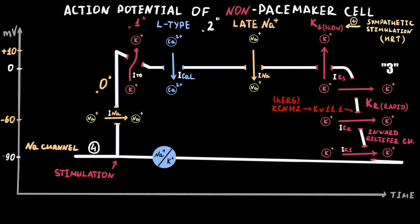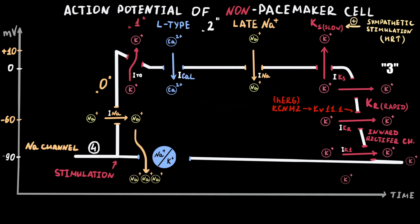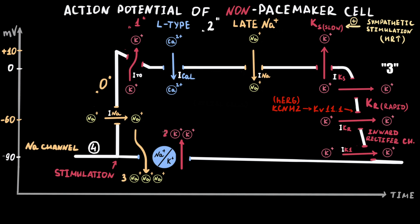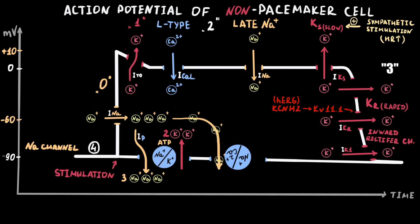There are two important ion exchangers. The sodium-potassium pump moves three sodium ions out of the cell in exchange for two potassium ions that move into the cell, and requires energy from ATP splitting. Another exchanger is the sodium-calcium exchanger, which moves one calcium ion in exchange for three sodium ions and can work in both outward and inward directions depending on the situation.